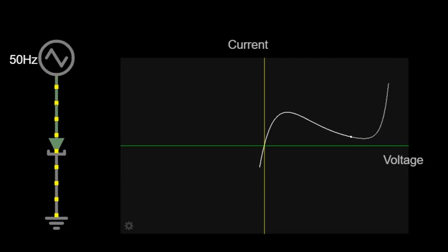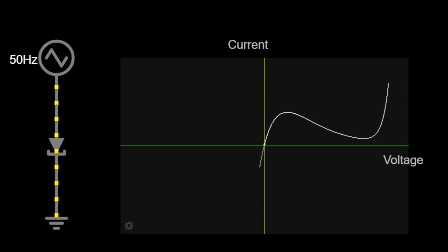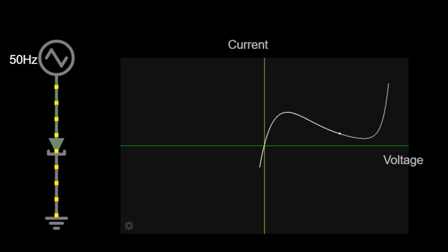A tunnel diode is a very special type of electronic component. It is a tiny device that lets electricity flow in a very strange way. Normally, in a regular diode, electricity can only flow when we push it with enough force, called voltage. But the tunnel diode is different. It has a superpower called quantum tunneling, which allows electricity to sneak through even when the push is very small.